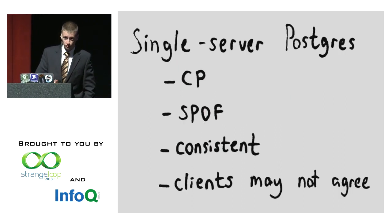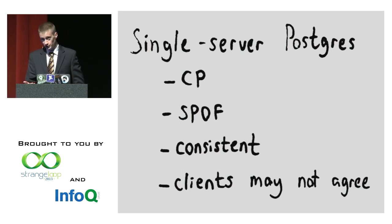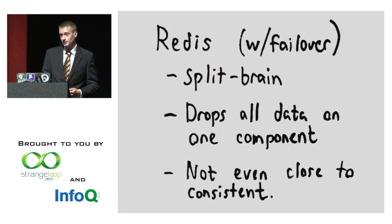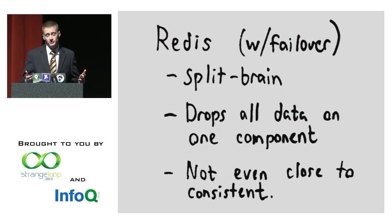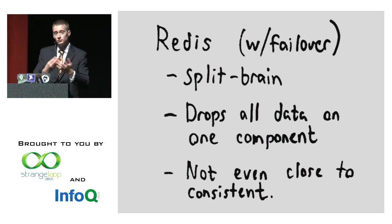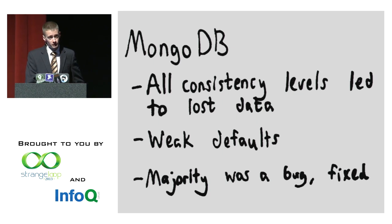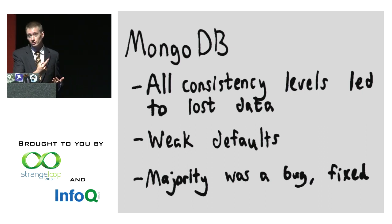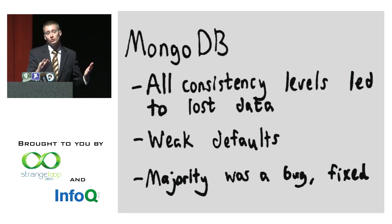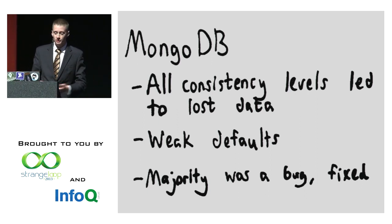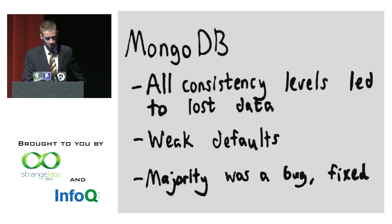Back at Recon I explored a couple of databases. Single-server Postgres is a single point of failure but it's consistent. Redis goes into split-brain mode during partition and drops all the data written to one side — you can't really trust Redis, and this is a consequence of asynchronous replication models. You can't ever failover in an asynchronously replicated system without the potential to lose some data. MongoDB — every single consistency level led to lost data, partly due to weak defaults. The old defaults were to write without checking if it succeeded. The majority setting had a bug which caused failed network connections, i.e., timeouts, to be counted as successful responses for get-last-error. That's now fixed.